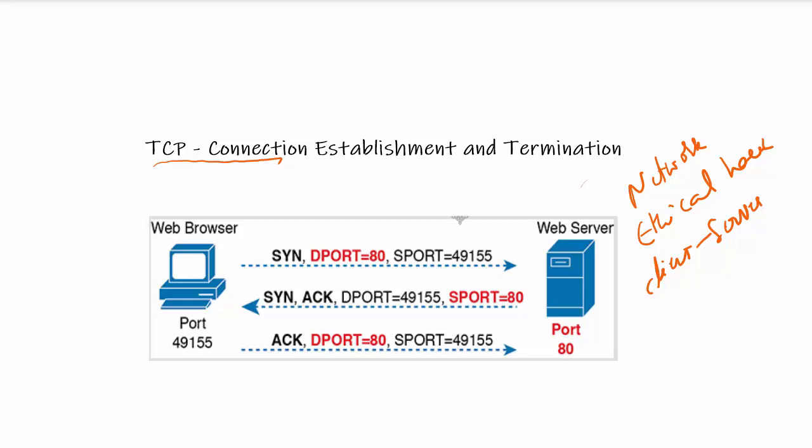TCP connection establishment occurs before any other TCP features can begin their work. Connection establishment refers to the process of initializing sequence and acknowledgement fields — which I have explained in my previous videos — and then agreeing on the port numbers used in the TCP connection. This three-way connection establishment flow is also called as the three-way handshake.